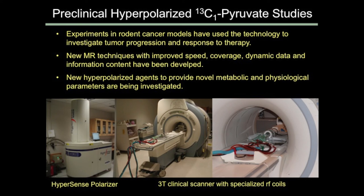We began with preclinical studies. This is a polarizer — the instrumentation in which you do the polarization and generate the agent. The first experiments were done in mice and rats; the first ones were in rats because they're slightly larger and give you a slightly higher signal. The idea was to investigate tumor progression in response to therapy and see what our measurements were able to give us. We also needed to develop new magnetic resonance techniques able to measure the signal as fast as we wanted, and to investigate different carbon-13 labeled agents to examine different metabolic processes.